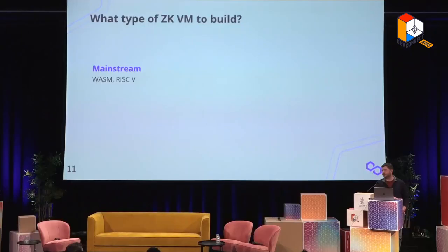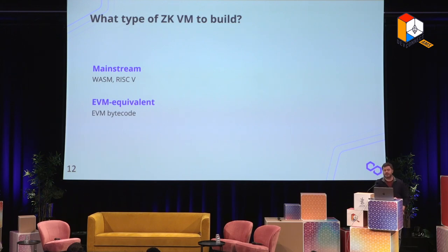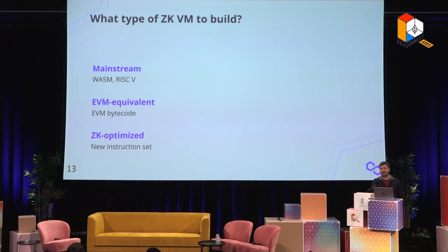Now that we know we want to build a ZKVM, what kind should we build? You could build something using a mainstream architecture like WebAssembly or RISC-V, or you could build something EVM equivalent that can execute EVM bytecode at a binary level, or you can do something new with a new instruction set that could be ZK-optimized. There are pros and cons and different properties for each of these approaches.